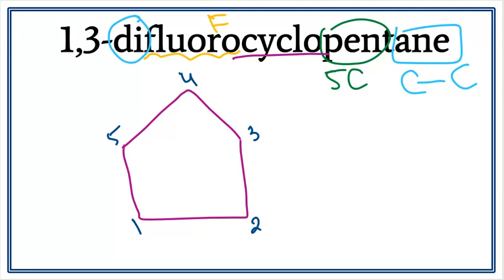The di here tells us that there are two fluorines attached. One on the first carbon and the other one on the third carbon. So, let's get rid of these numbers and let's attach fluorine on the first carbon here and on the third carbon here.